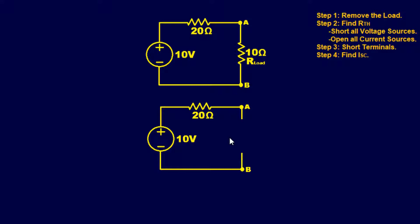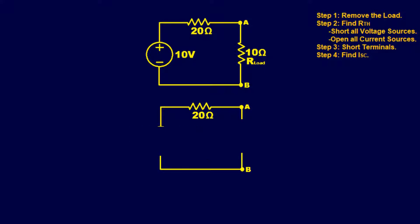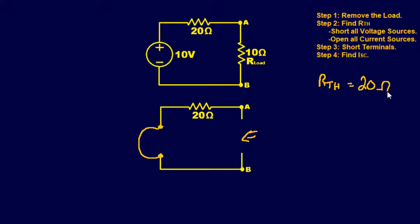We find the Norton resistance by shorting the voltage sources and opening the current sources. There are no current sources, so we only need to short the voltage source. With the voltage source replaced by a short, we find the resistance as seen between points A and B. We only have one resistor and it's in series, so that's 20 ohms. The Norton resistance for this equivalent circuit is 20 ohms.